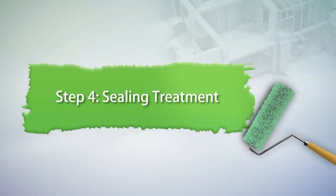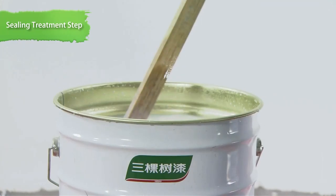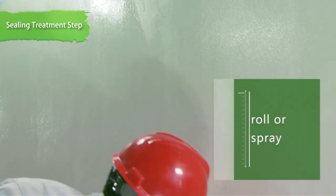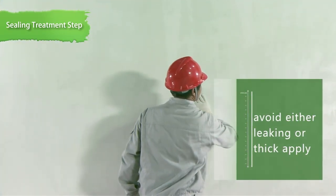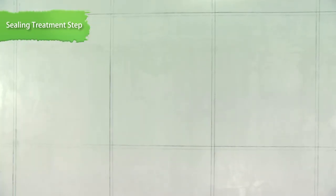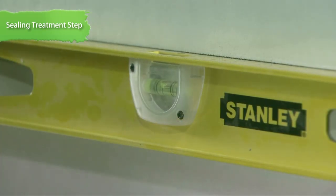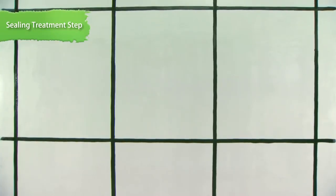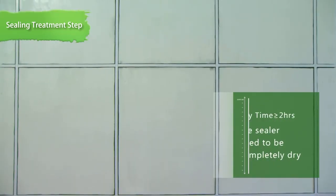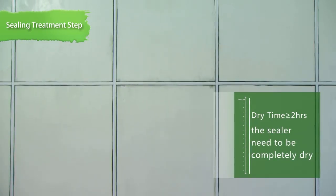Step 4: Sealing Treatment. Evenly apply Three Trees Matching Primer onto the surface of putty layer. The dividing line should be drawn if there are dividing strips. You should paint the color of the dividing lines first until the color is completely dry, then adopt the masking tape to cover it. Only when the sealer is completely dry, you can take the next step.